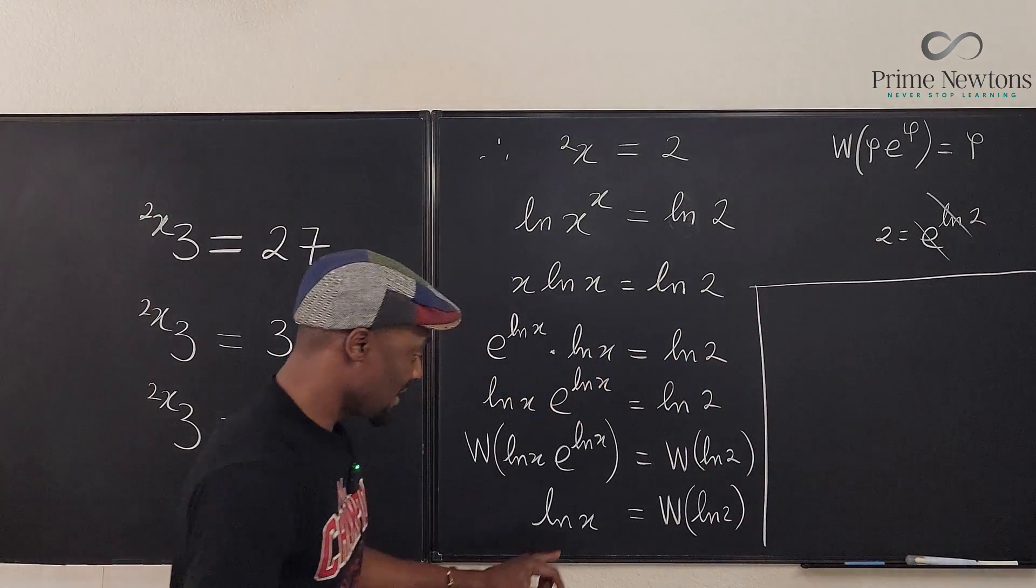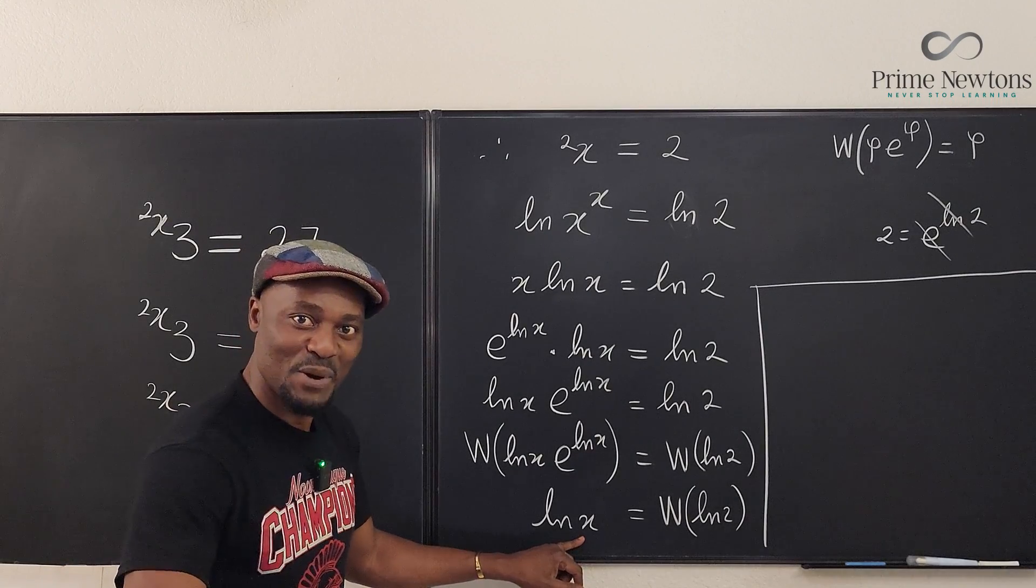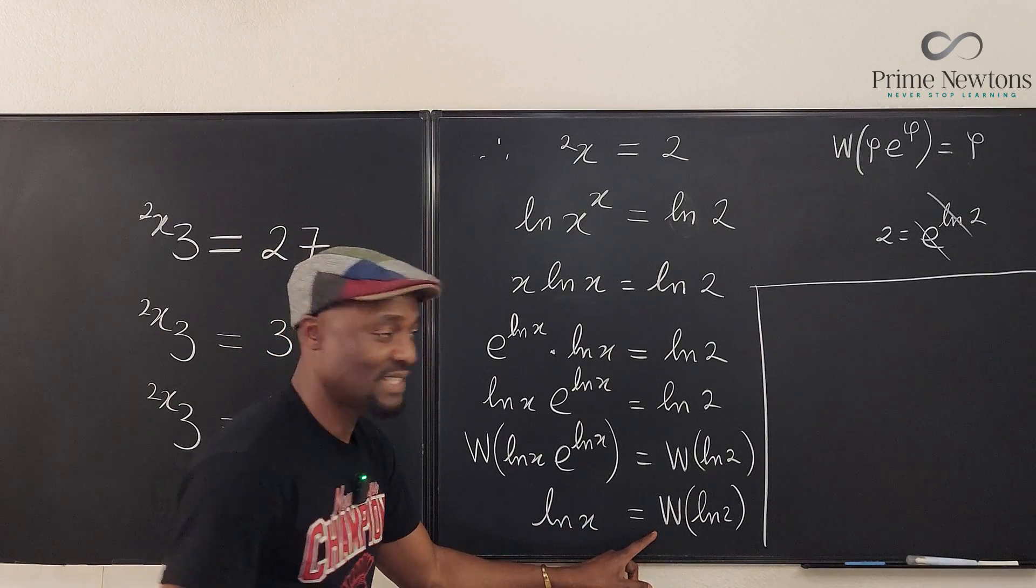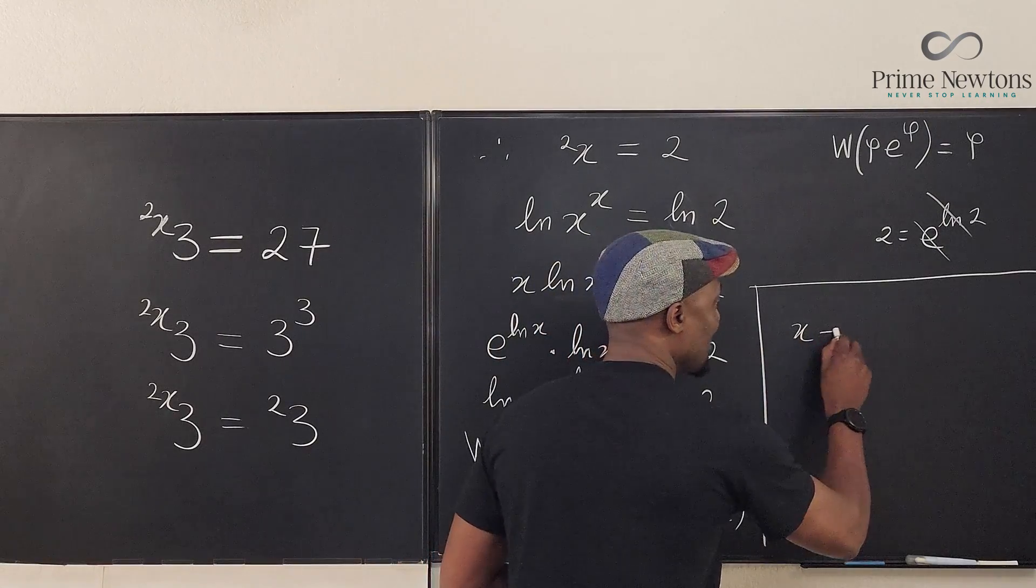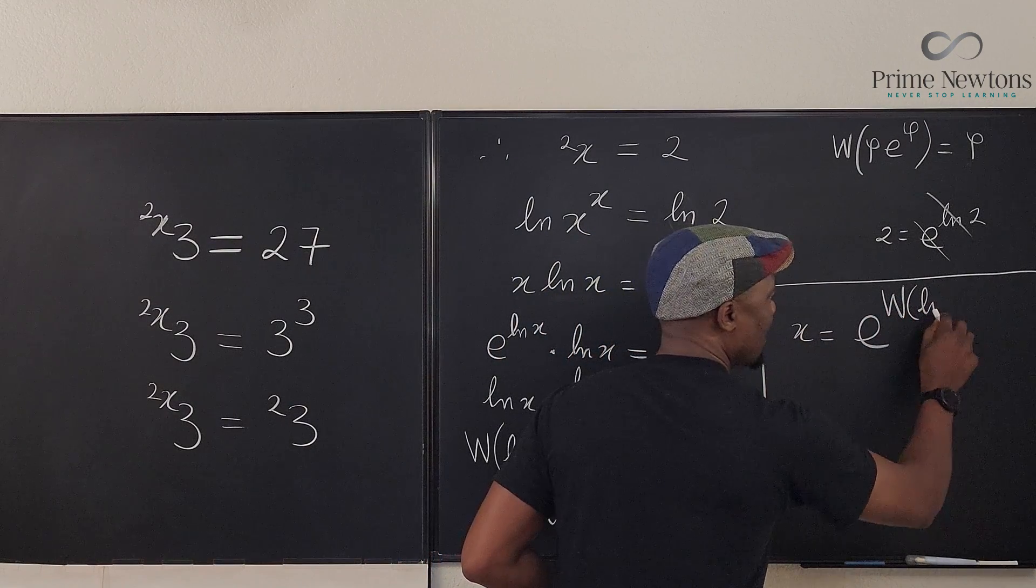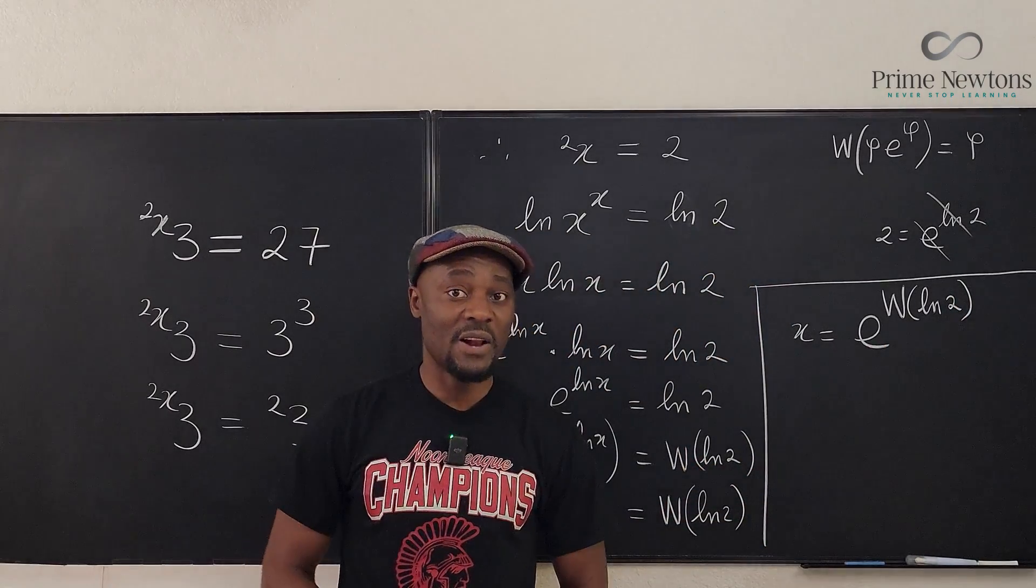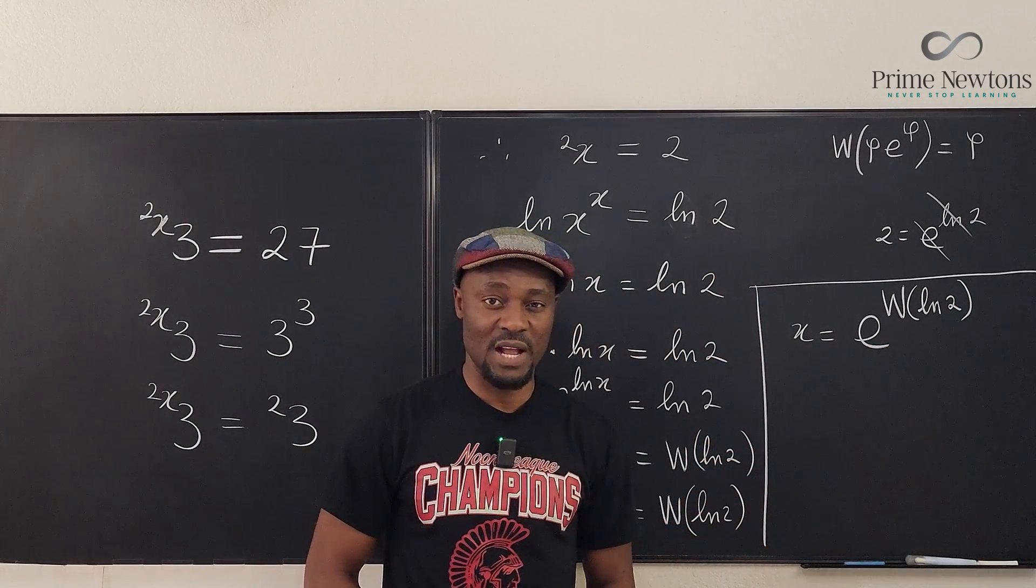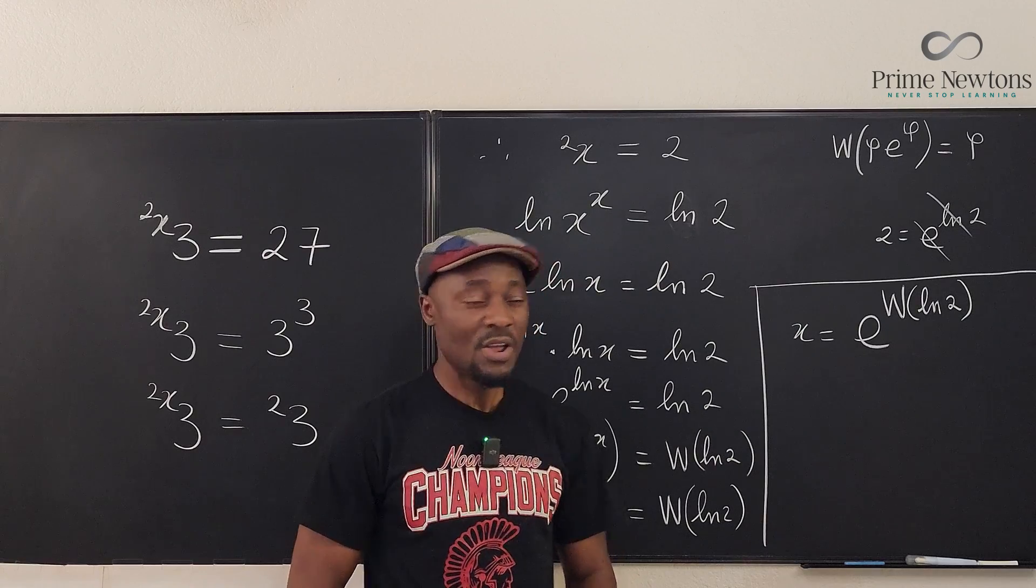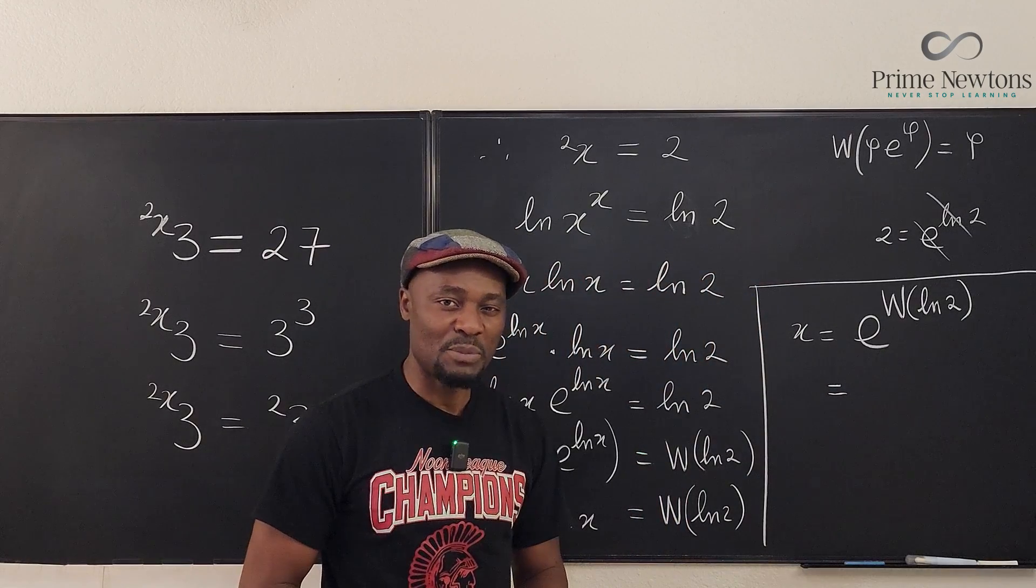Guess what? You can plug this. Well, let's isolate x. How do you get x out of natural log? You take the E of both sides. So if I take the E of this, take the E of this, guess what I get? I get my x will be equal to E to W of ln of 2. And this, I can plug into any calculator that's capable of doing this calculation and get my answer. Well, the answer to this, you can plug it into Lambert W function.